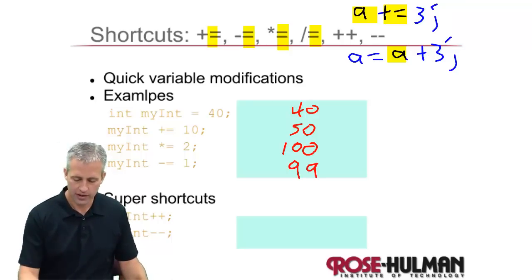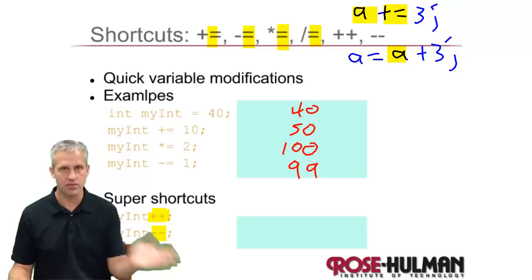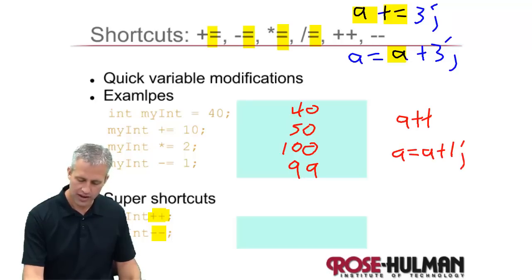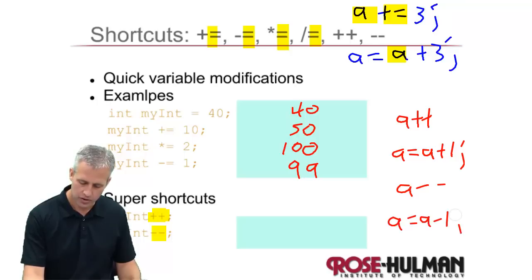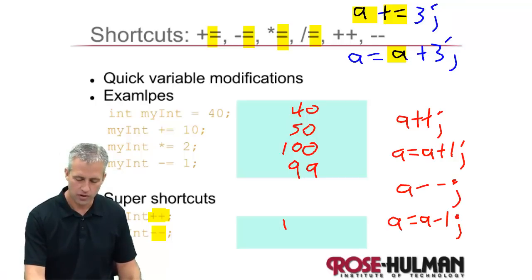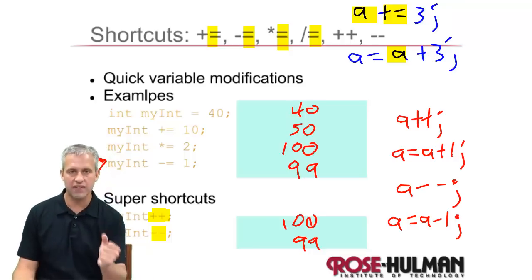There are a couple more shorthand operators: plus-plus and minus-minus. Plus-plus is of course how C++ got its name — it's the next iteration of C. Plus-plus is shorthand for a equals a plus 1, and minus-minus is just a equals a minus 1. It's simply shorthand because people add or subtract 1 from a number so often. So plus-plus would bring it back up to 100, and minus-minus would bring it back to 99.